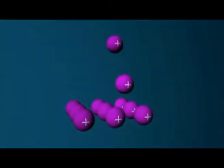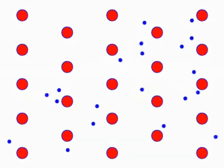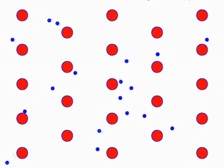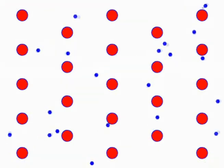In a metal, the atoms are arranged in nice neat rows. And the thing that makes metals special is that some of the electrons aren't actually attached to a particular atom — so they're free to move around between the atoms in the metal. We call these electrons free electrons.